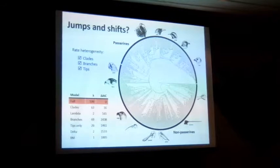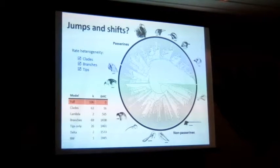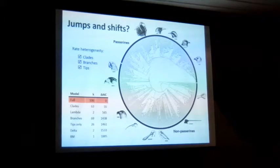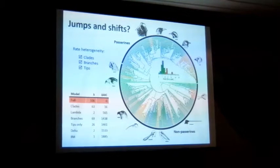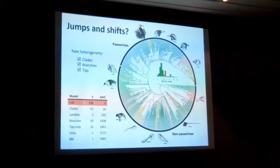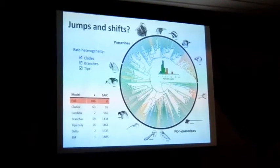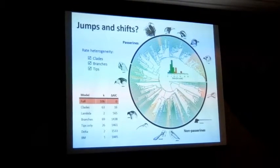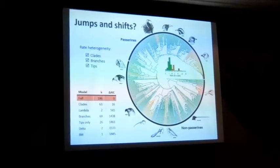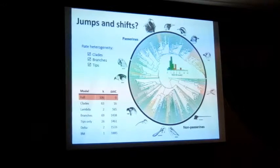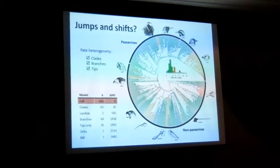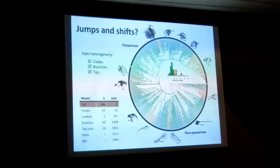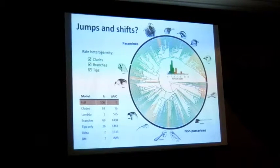We find the strongest support for the most complex model involving all three types of rate heterogeneity. What that looks like when plotted on a tree is a process of gradual phenotypic divergence interspersed with instances of evolutionary bursts and also slowdowns affecting whole clades and single lineages right across the radiation.